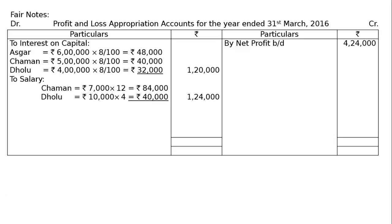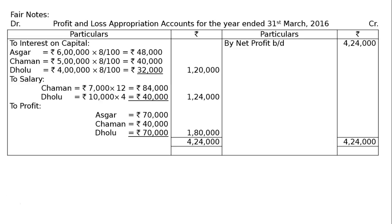For salary: Chaman's monthly salary is Rs. 7,000 per month × 12 = Rs. 84,000. For Dholu, it is Rs. 10,000 per quarter × 4 quarters = Rs. 40,000. Hence, total salary is Rs. 1,24,000. The profit is Rs. 4,24,000 minus Rs. 1,20,000 for interest on capital minus Rs. 1,24,000 for salary, leaving Rs. 1,80,000. The profit shares — Rs. 70,000 for Oskar, Rs. 40,000 for Chaman, and Rs. 70,000 for Dholu respectively — as already calculated in the working notes.